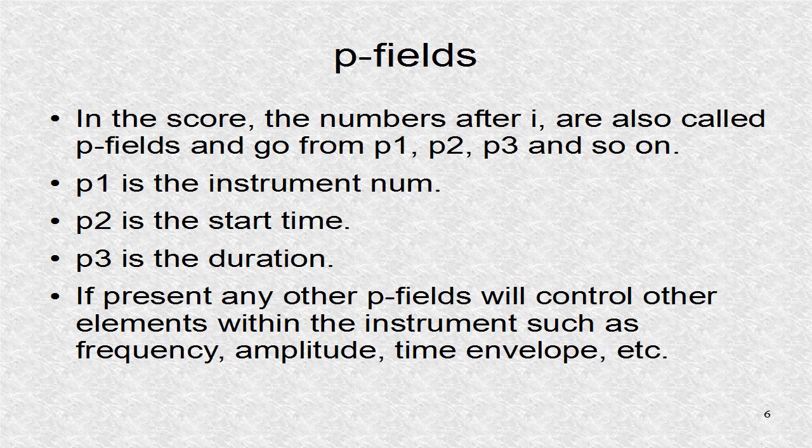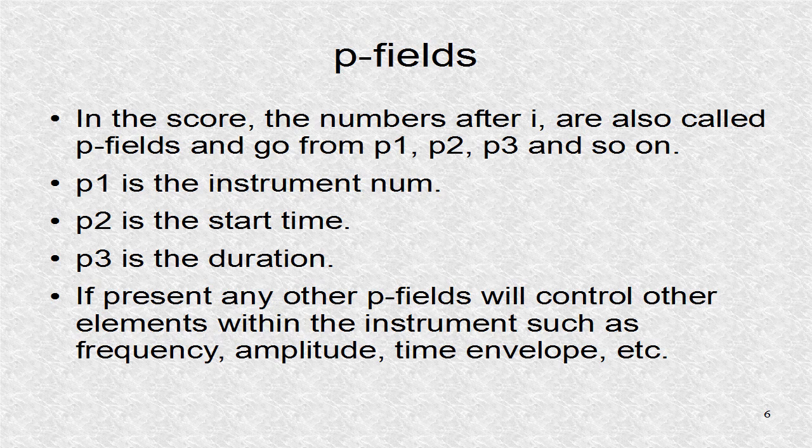The first three numbers in the scoreline are known as P1, P2, and P3. These are collectively called the P-fields. There might be other numbers such as P4, P5, and so on. The meaning of the additional P-fields will be instrument-dependent. For example, P4 might be the frequency.